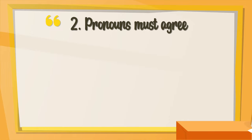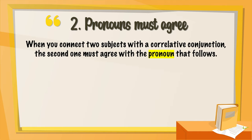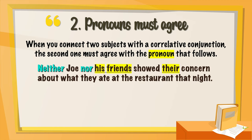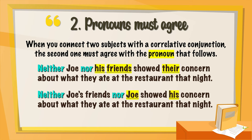Pronouns must agree. When you connect two subjects with a correlative conjunction, the second one must agree with the pronoun that follows. Neither Joe nor his friends show their concern about what they ate at the restaurant that night — "their" because we're describing his friends. In the reversed order: neither Joe's friends nor Joe shows his concern — "his" referring to Joe. So pay attention to the pronoun.